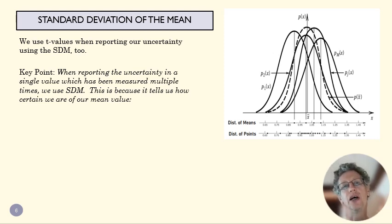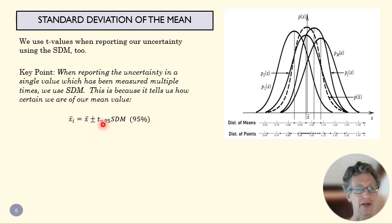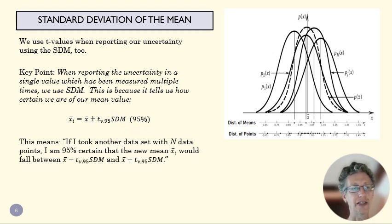In that case, standard deviation of the mean is the thing that's going to describe what my uncertainty is. That's going to look like this with a t value, where this is my degrees of freedom and this is my confidence level. I'm going to look up a t value, multiply it by that standard deviation of the mean. If I took another data set with n data, my new mean would fall within this range. This is a key expression for our practical lab reports because we'll use that a lot.